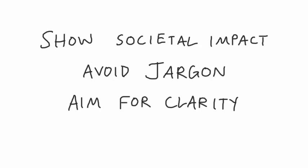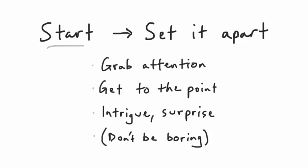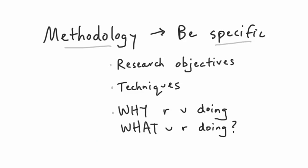Show how your results will impact society. Avoid jargon and aim for clarity. Right from the start, set your proposal apart — grab the reader's attention and get to the point. Introduce intriguing or surprising outcomes; you don't want your proposal to be boring, and neither does your reviewer. Be specific about your methodologies, including your research objectives and the techniques you'll use.